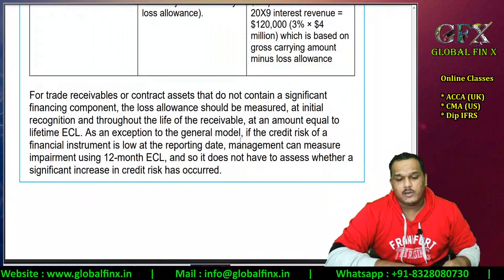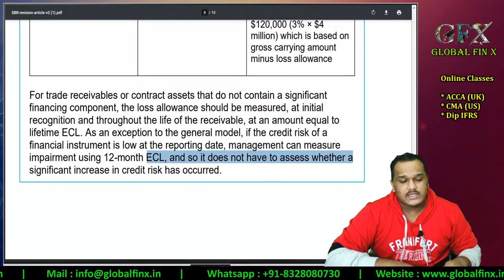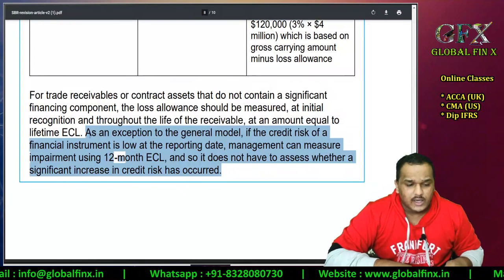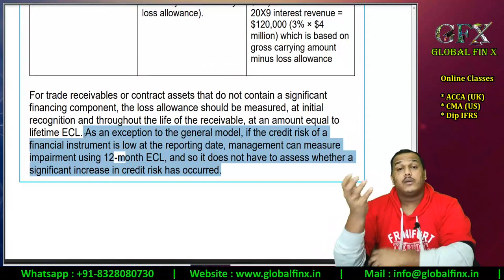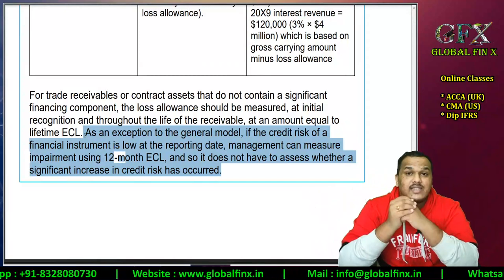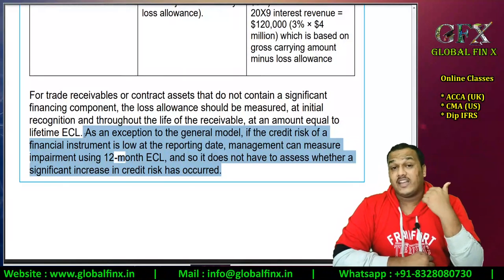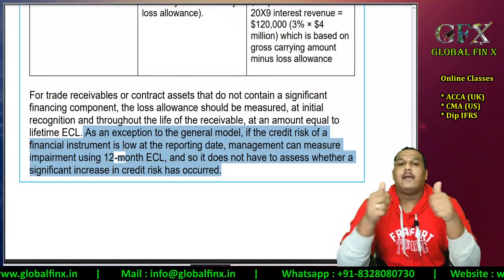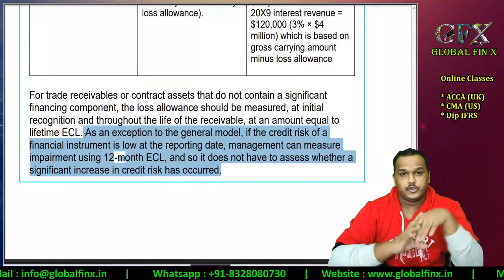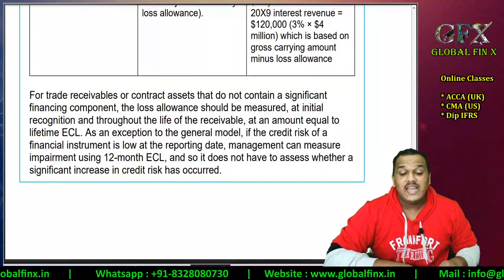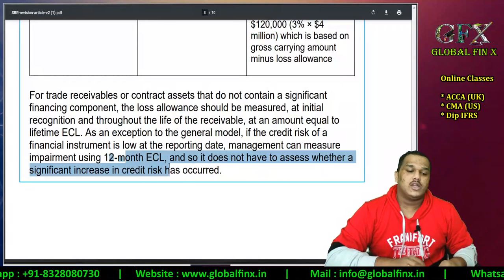In simple terms, it's like what you did in earlier studies: total receivables are $100,000, 10% expected to be doubtful, so $10,000 is the provision — without worrying about credit risk stages. That same relaxation is given under IFRS 9 for trade receivables without a significant financing component. As an exception to the general model, if the credit risk of a financial instrument is low at the reporting date, management can — not should — measure impairment using 12-month ECL, without having to assess whether a significant increase in credit risk has occurred.